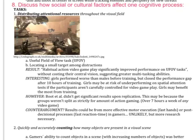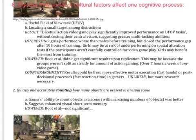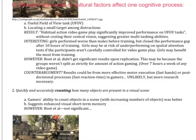This study by Hubert Wallander, Green and Bavalier looked at the useful field of view task — basically being able to identify what is useful in your field of view. They had participants locate small targets among distractions on a screen. They found that habitual action video game play significantly improved performance on these useful field of view tasks without costing central vision, suggesting that players are better at multitasking.